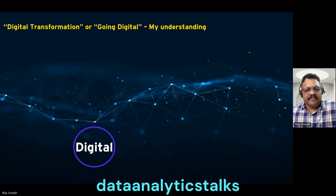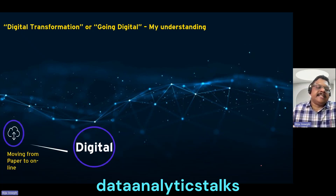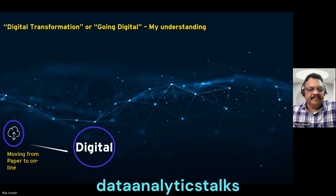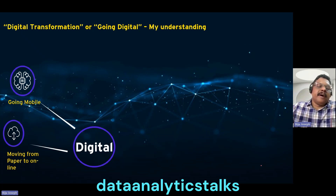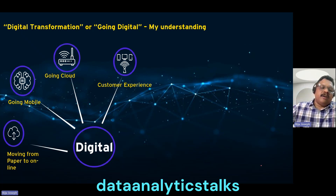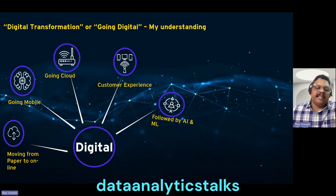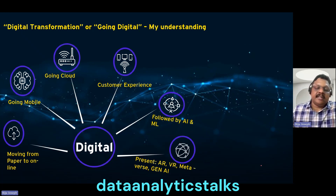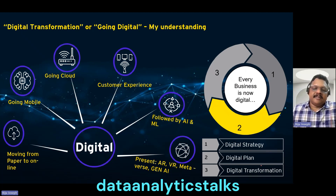Many of us are confused about the idea of digital transformation because the definition of 'digital' has evolved over the years. Initially it was just moving from paper to digital or online. Then it became going to mobile — everybody started buying mobile devices. Then going to cloud, then a focus on better customer experience, followed by AI and machine learning. Now we talk about AR, VR, metaverse, and generative AI. Every company, every business is now a digital business.